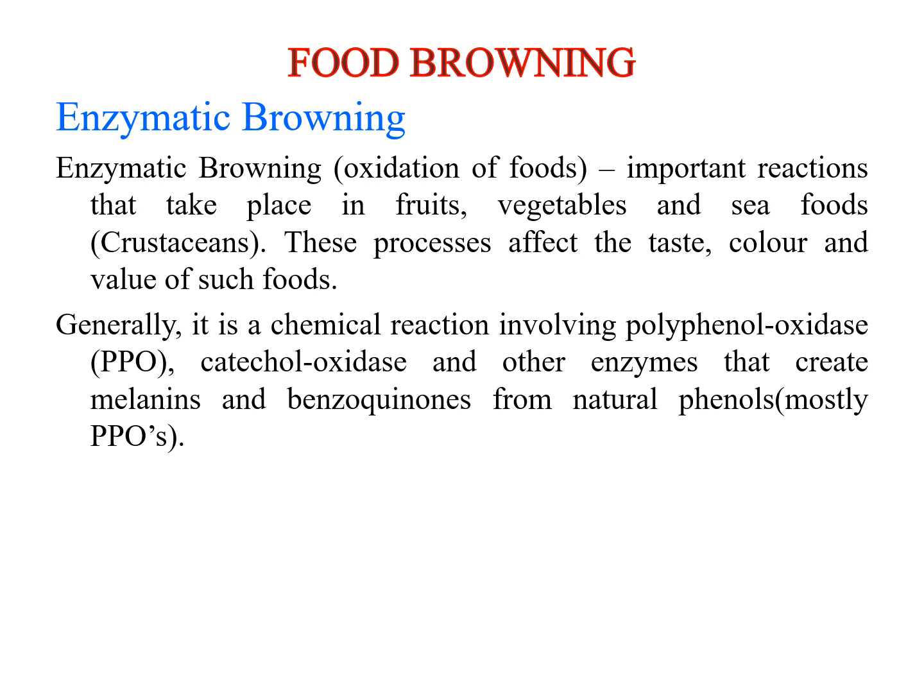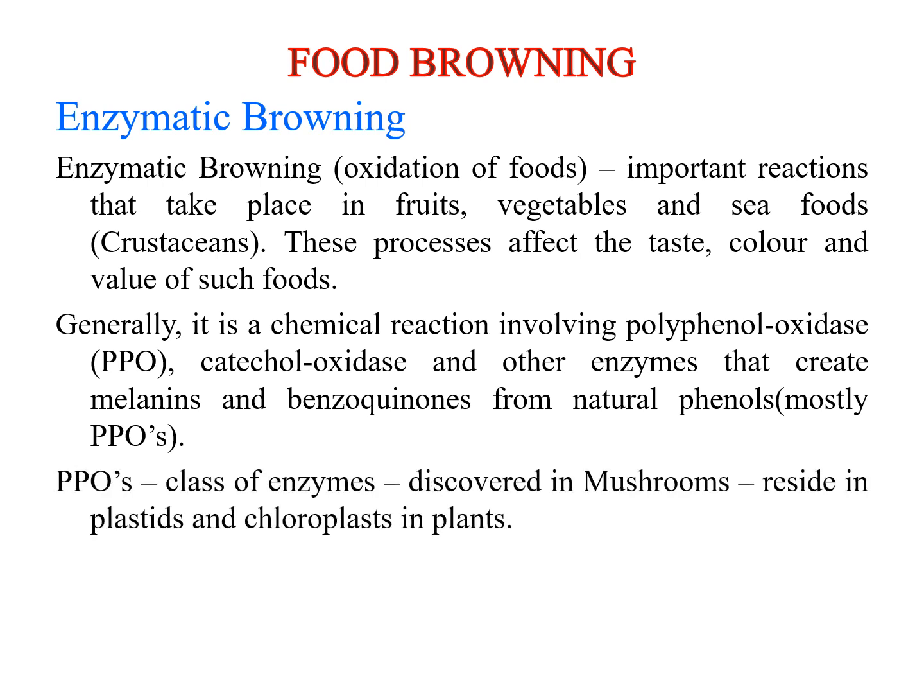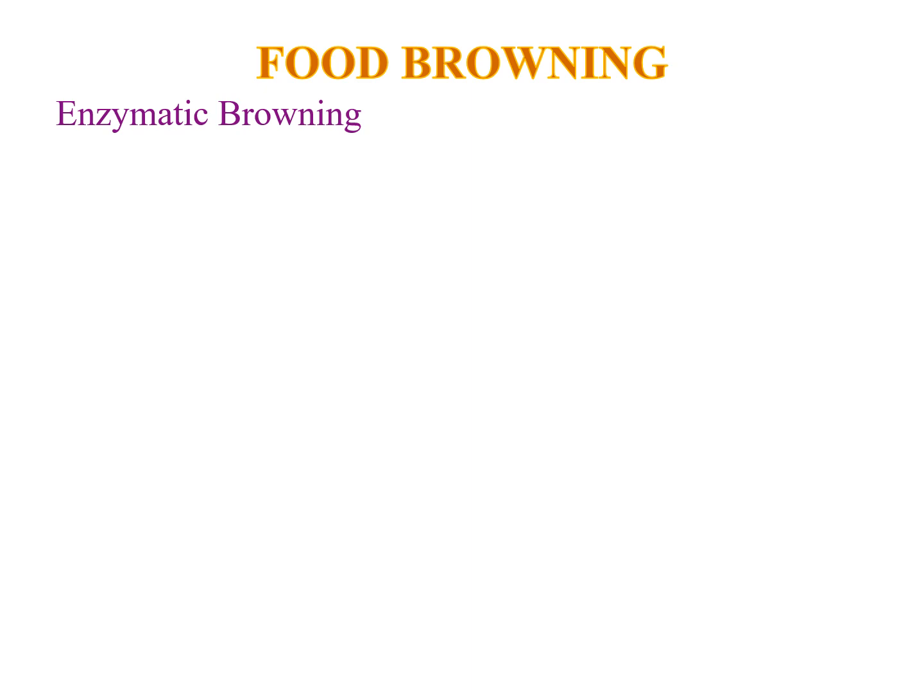Many enzymes are available, but browning particularly occurs due to the enzyme called PPO — polyphenol oxidase — and also catechol oxidase, along with many other enzymes that induce melanins and benzoquinones, which are brown pigments. PPO was first discovered in mushrooms and resides in plants, specifically in the chloroplasts of the plant cell wall structure.